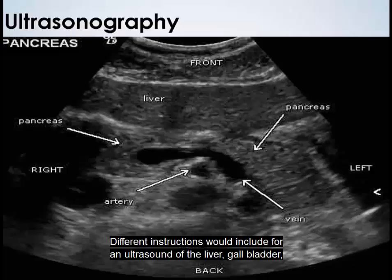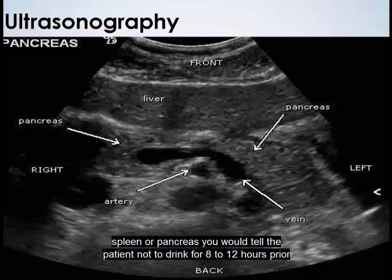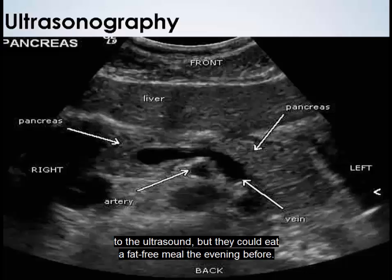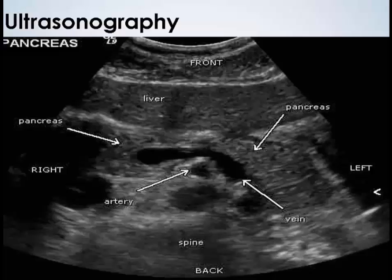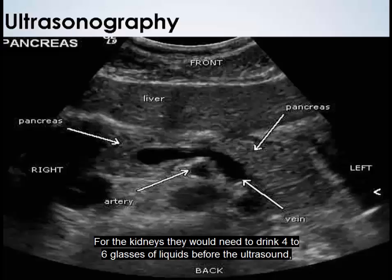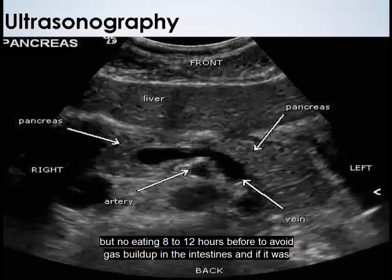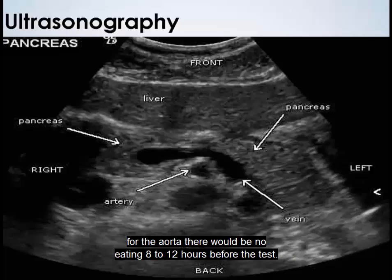Different instructions apply depending on the ultrasound type. For an ultrasound of the liver, gallbladder, spleen, or pancreas, tell the patient not to drink for eight to twelve hours prior, but they may eat a fat-free meal the evening before. For the kidneys, they should drink four to six glasses of liquids beforehand, but no eating eight to twelve hours before to avoid gas buildup in the intestines. For the aorta, no eating eight to twelve hours before the test.